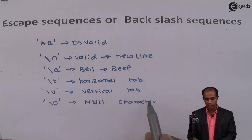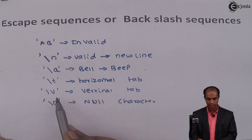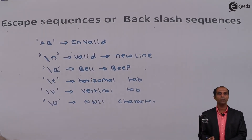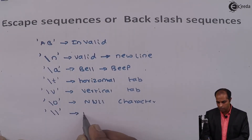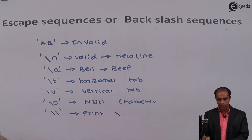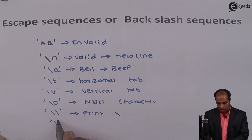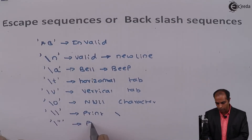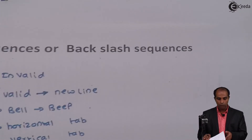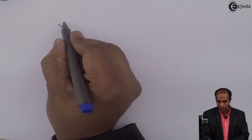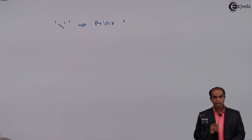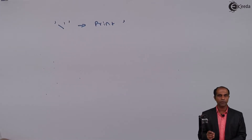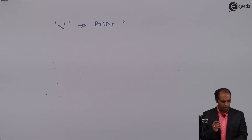There are more escape sequences used to print non-printable characters. For example, '\\' prints one backslash. '\"' is used to print a double quote. '\'' is used to print a single quote. These are non-printable characters in C language that can be printed using escape sequences.